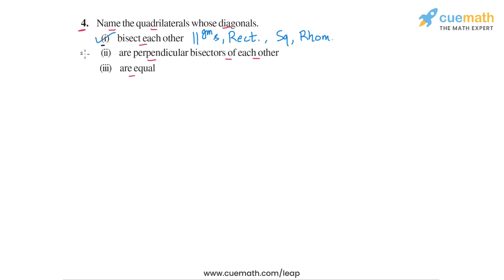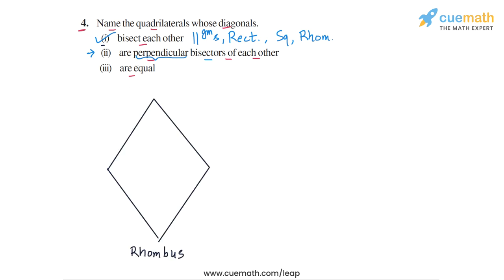In part two, we have to name the quadrilaterals in which the diagonals are perpendicular bisectors of each other. If the diagonals are bisectors of each other, the quadrilateral must be a parallelogram. But we want the diagonals to be perpendicular bisectors of each other. In rhombuses, the diagonals are perpendicular to each other, and because they also bisect each other, in any rhombus the diagonals will be perpendicular bisectors of each other.